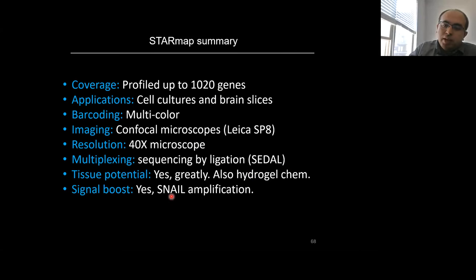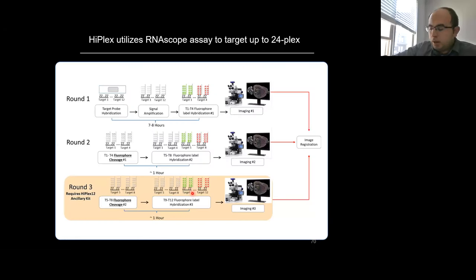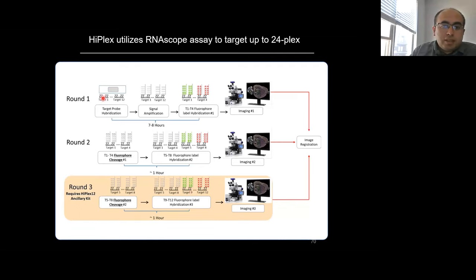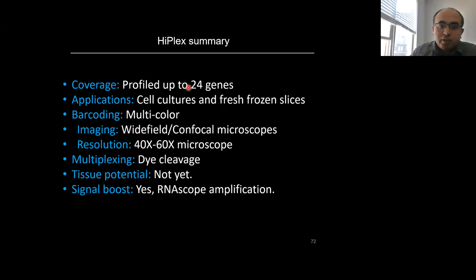Another commercial assay is RNAscope from ACD Bio. It targets RNA using ZZ probes specific for RNA targets, and using multiple sequential labeling approaches creates 12-plex maps. Here are 12-plex maps in brain slices — this technology can get about 24 genes using RNAscope amplification with ZZ probe structures.